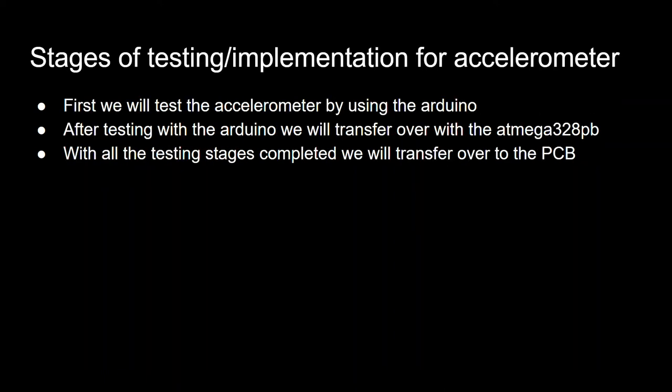Stages of testing and implementing for the accelerometer: first, we will test the accelerometer by using the Arduino. After testing the Arduino, we will transfer over to the ATmega 328PB. With all the testing stages completed, we will transfer over to the PCB.